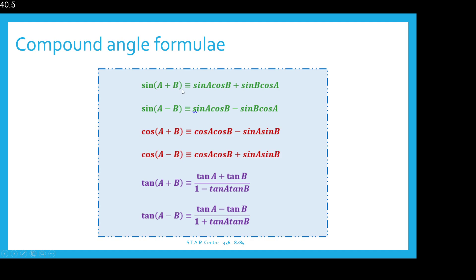Sine of A plus B is identical to sine A cos B plus sine B cos A. Sine of A minus B is identical to sine A cos B minus sine B cos A — very similar to the first one but with different signs. For cos, cos of A plus B is identical to cos A cos B minus sine A sine B, and cos of A minus B is the same with the signs different. Tan of A plus B is equal to tan A plus tan B over 1 minus tan A tan B.